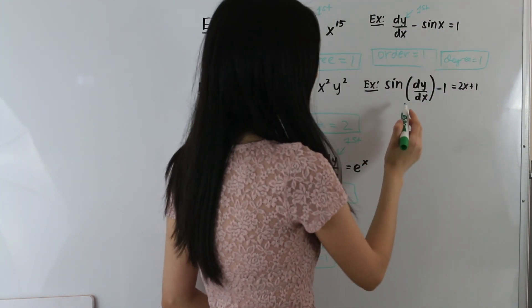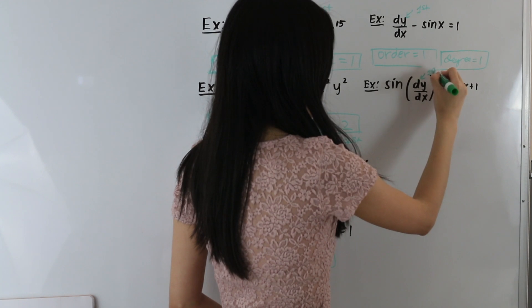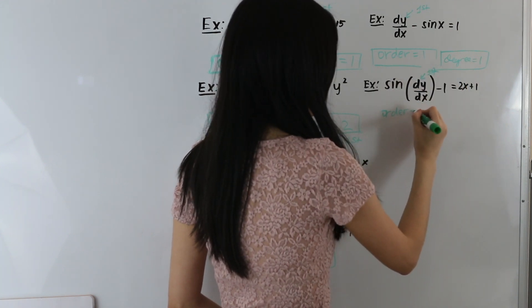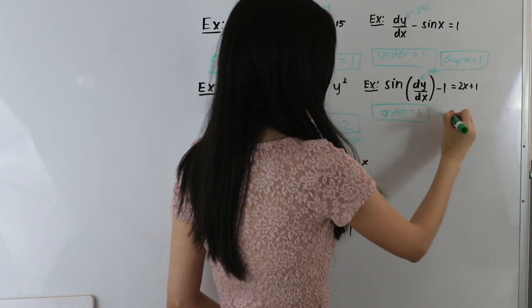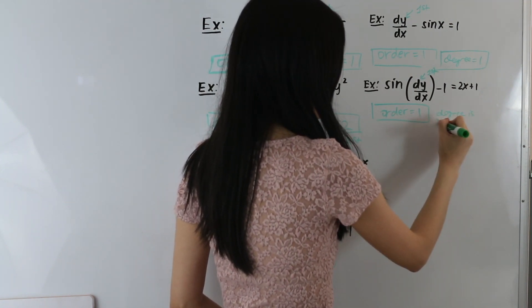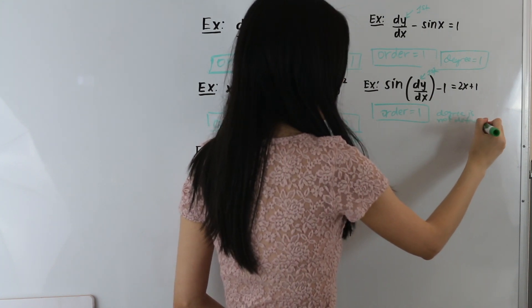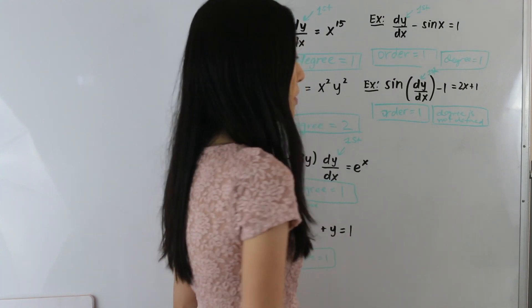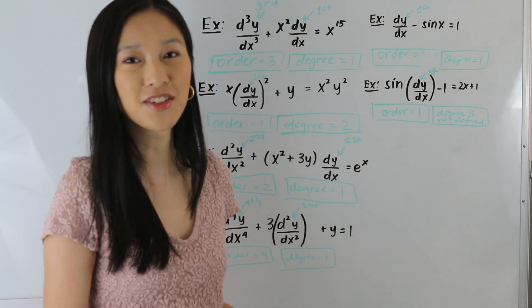In this next one, labeling our derivative, this is first order, so our order is equal to 1. This is actually a special case where the degree is not defined, because the equation is not in the form of a polynomial — this also applies to other trigonometric functions as well.